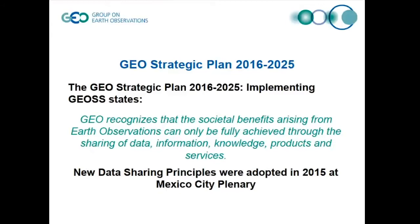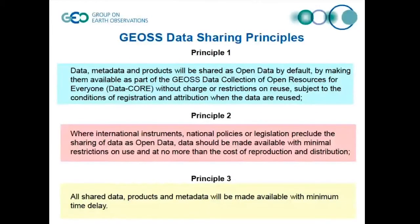Many international organizations and governments recognize the value of things like open government data, and GEO should update its principles to recognize first the benefits arising from open sharing of data, information, knowledge products and services, but also that data should be open by default. The assumption would be that data entering into GEOS — the Global Earth Observing System of Systems — ought to be assumed to be open unless the contributor specified restrictions, charges, or other conditions. That's the first principle.